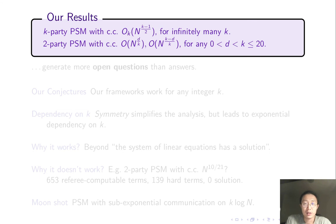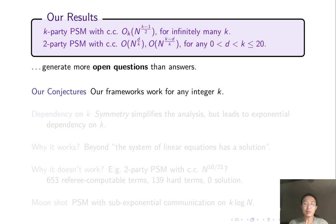So far we have sketched our results for k-party PSM and for two-party PSM with unbalanced communication. The results generate more questions than answers. The most immediate question. Do our frameworks work for any k? We conjecture yes. I would be very surprised if the answer is no.